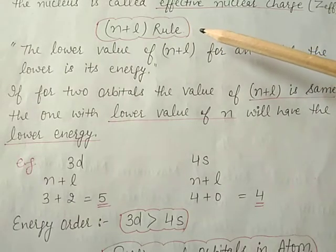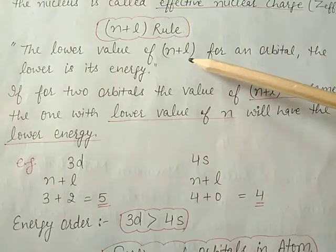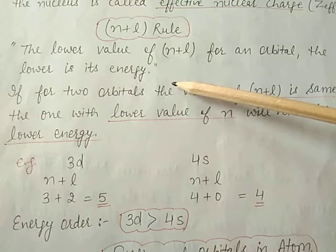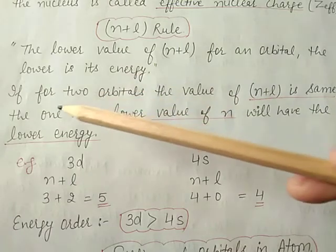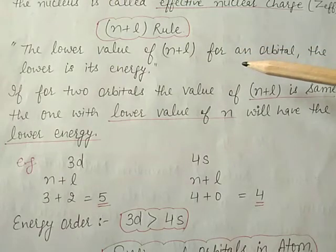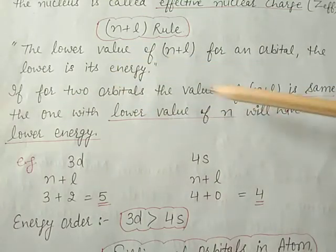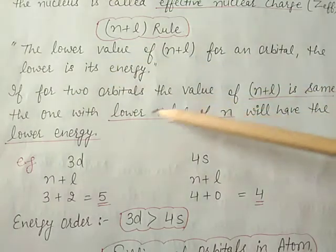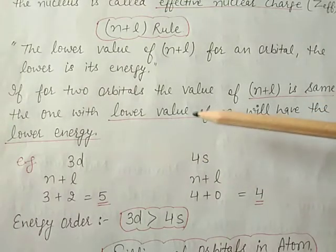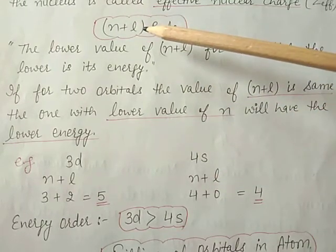The next topic is the n plus l rule. According to this rule, the lower the value of n+l for an orbital, the lower will be its energy. So n+l is directly proportional to energy. If for two orbitals the value of n+l is the same, then the one with the lower value of n will have the lower energy.